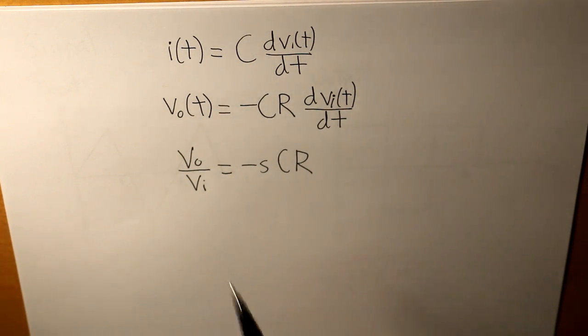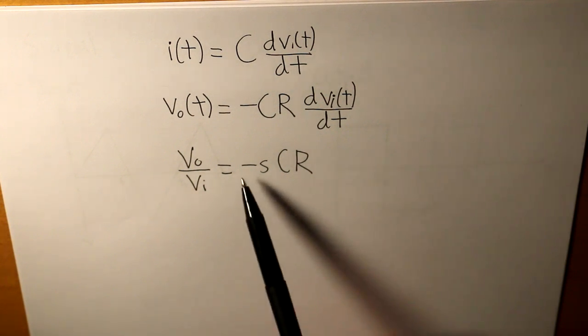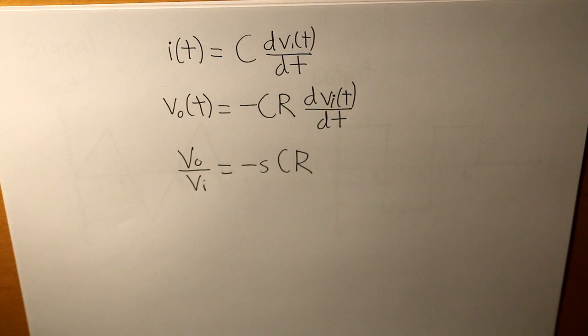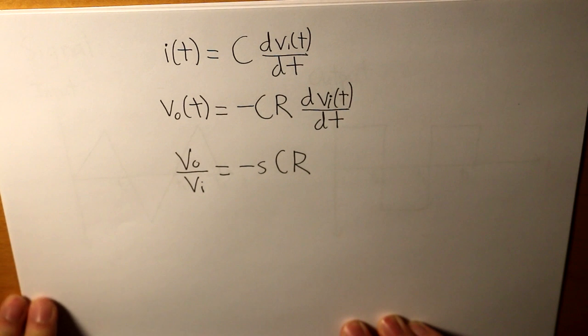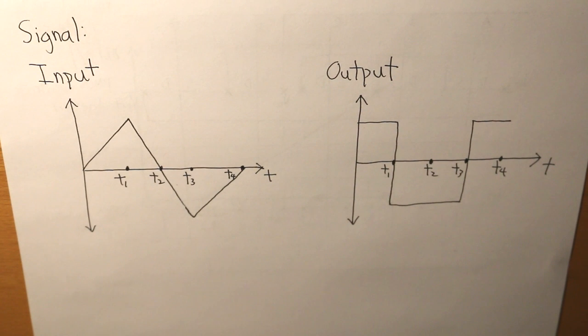And our gain or simply our transfer function is basically going to be the same thing: negative times our differentiation time constant, and this s is simply in the frequency domain. So those are the three equations that we are going to be using when dealing with differentiators.